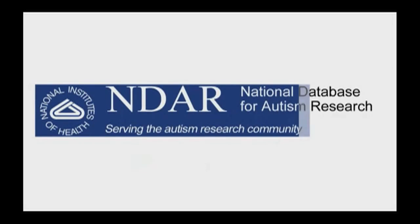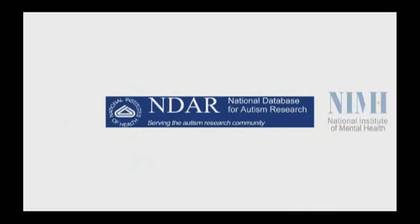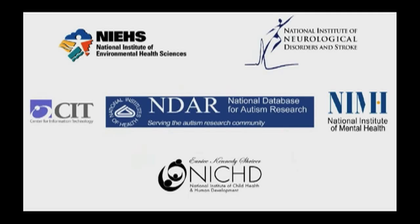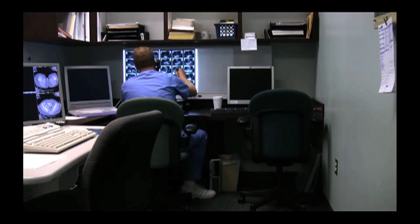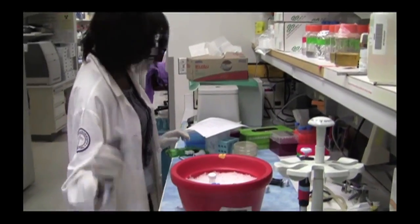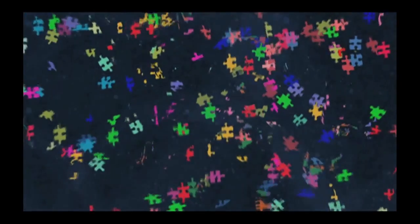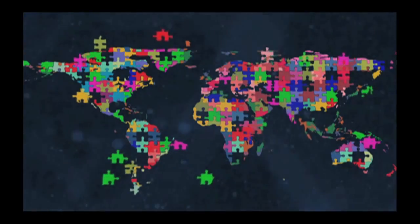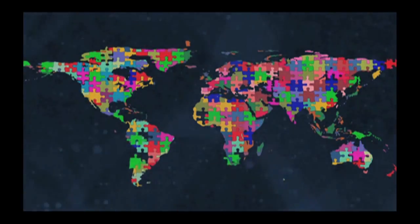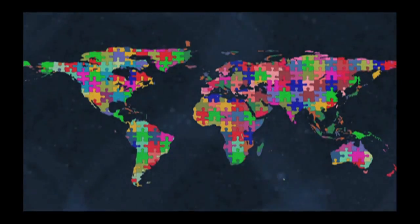The National Database for Autism Research, or NDAR, was created as part of the federal response to address the needs of scientists studying autism. The goal of NDAR is to make available to scientists all of the human autism data now being collected, ranging from molecules to genes to behavioral, social, and environmental interactions. These data are being collected not only at NIH, but also at private organizations and international research efforts being conducted around the globe.